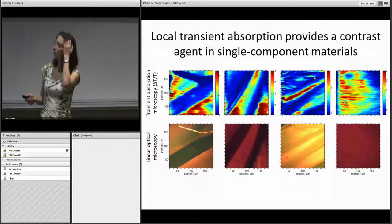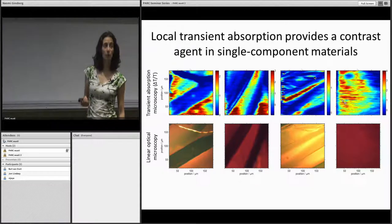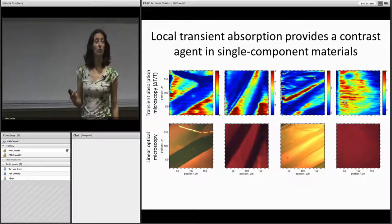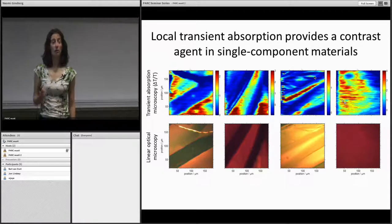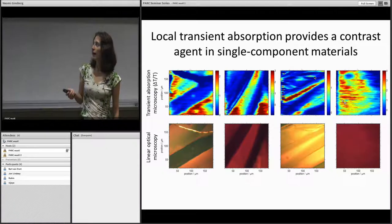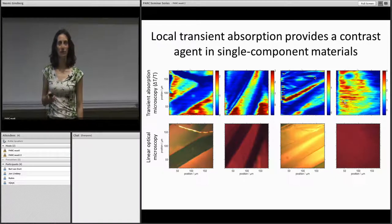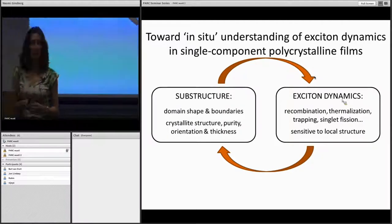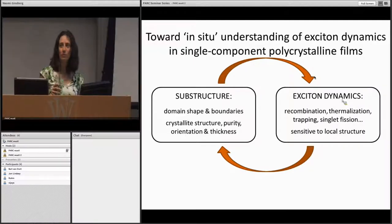Here's what that looks like in these materials. Along the bottom are steady-state transmission images of three different regions of interest in films of TIPS pentacene. Along the top, for a fixed time delay between pump and probe, we show the transient absorption measurement. We can pick up the general domain structures seen in the linear measurements in our nonlinear measurements as well, but there's a lot of additional information encoded in the transient absorption. It would be really deleterious to try to average over all this information — we'd be washing out many details.